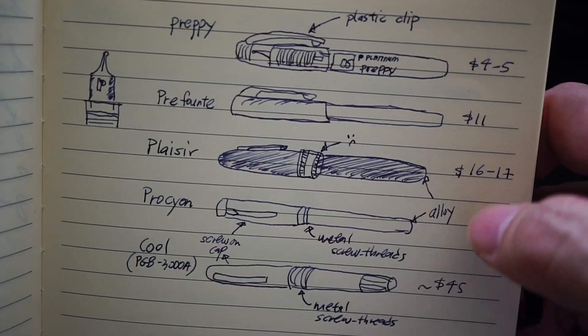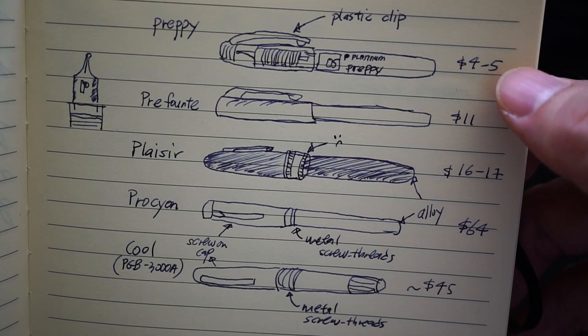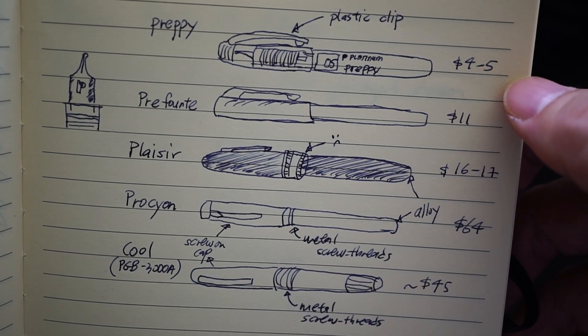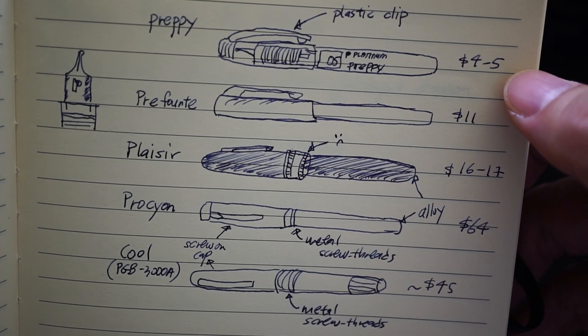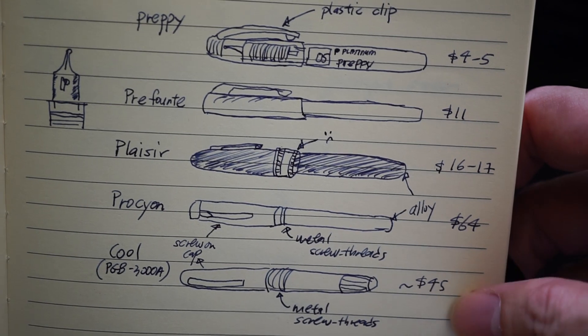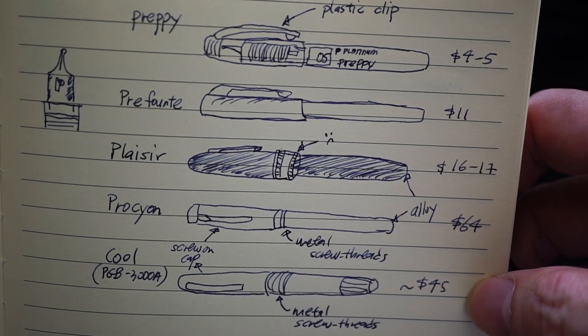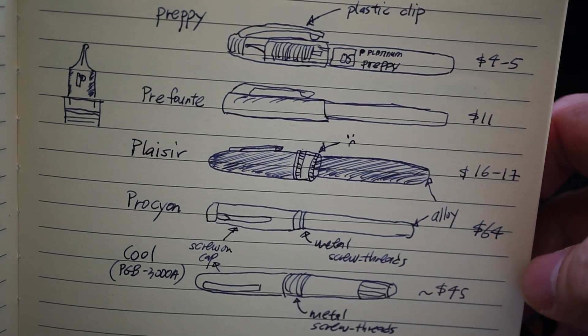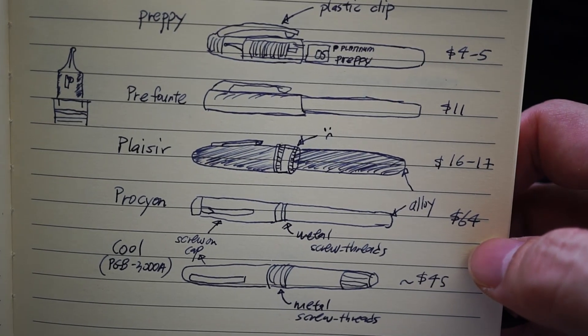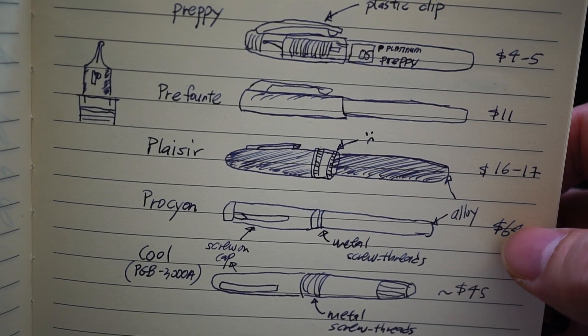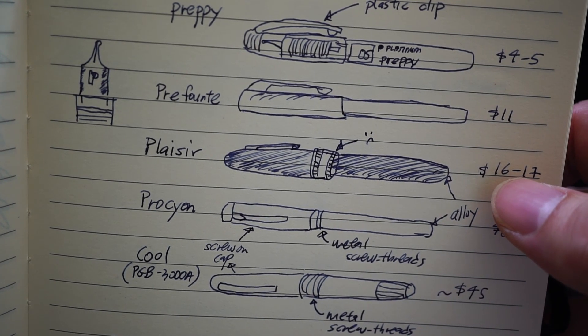Last but not least we have the price. Looking at the price points, the question which I'm going to attempt to answer today, at least for myself, is if the Preppy is like four to five dollars, do all these other pens actually have a place? Or if you're deciding to get a Platinum, one of these Platinum pens that you're looking at right now.